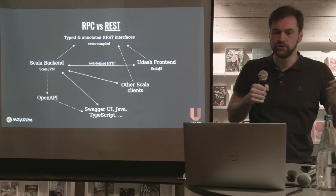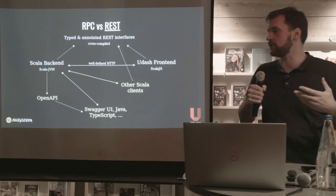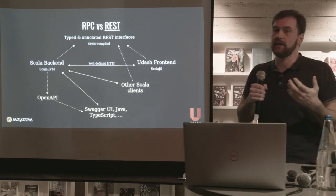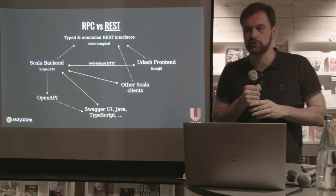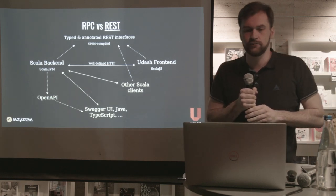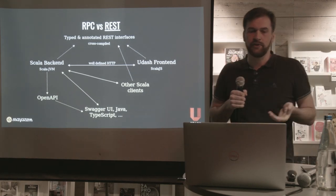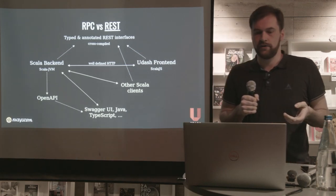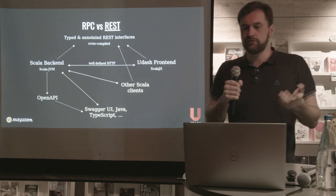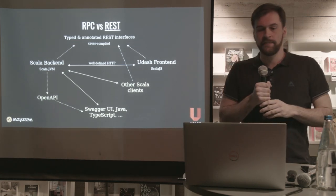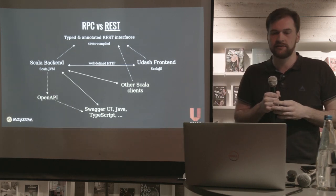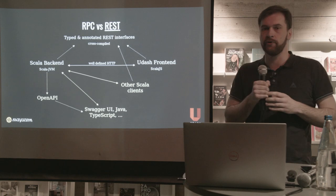In REST, the communication between the client and the server is also based on traits, but it's well-defined because it's now HTTP requests and responses. We can control how these requests and responses look, and we also have OpenAPI generation from the traits which define the API. Thanks to OpenAPI, we can consume this API from other languages — there are many tools that generate client code and server stubs in other languages, such as a TypeScript client or a Java client.